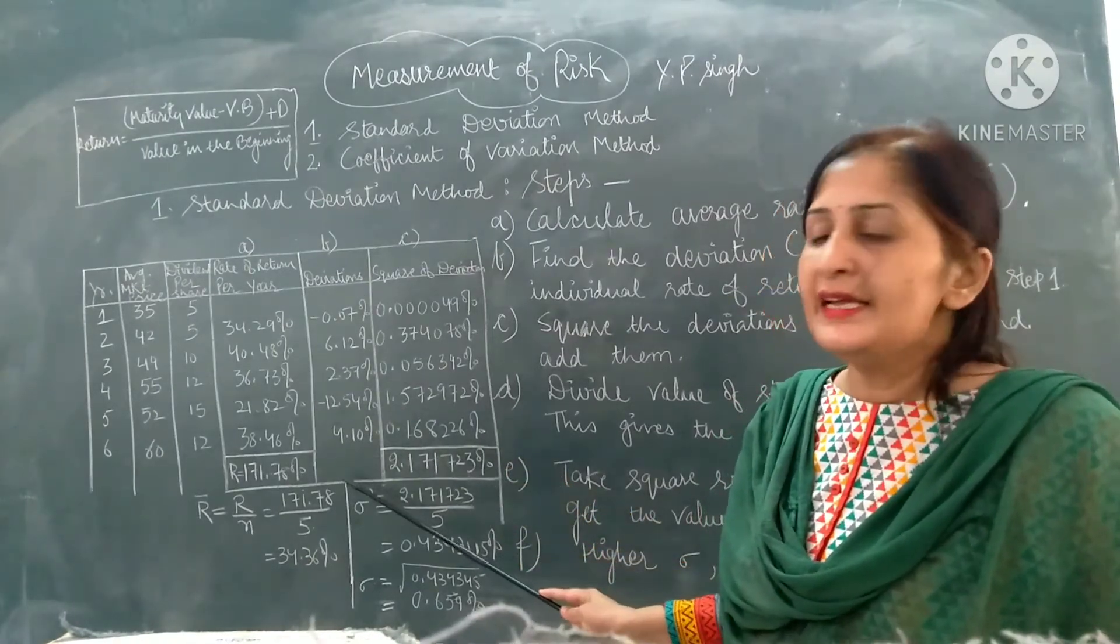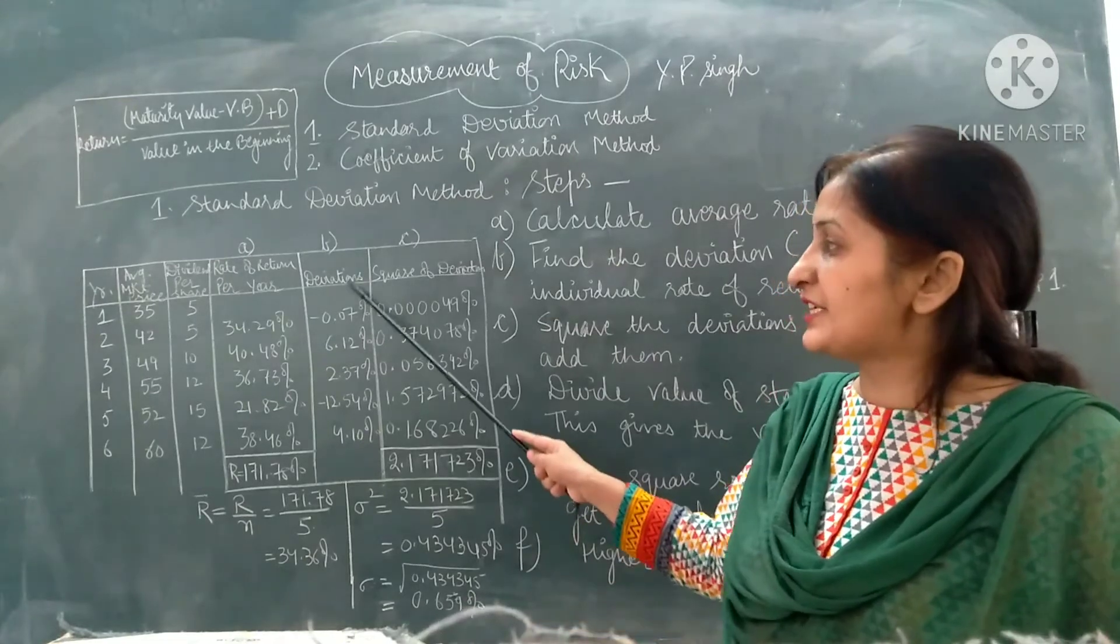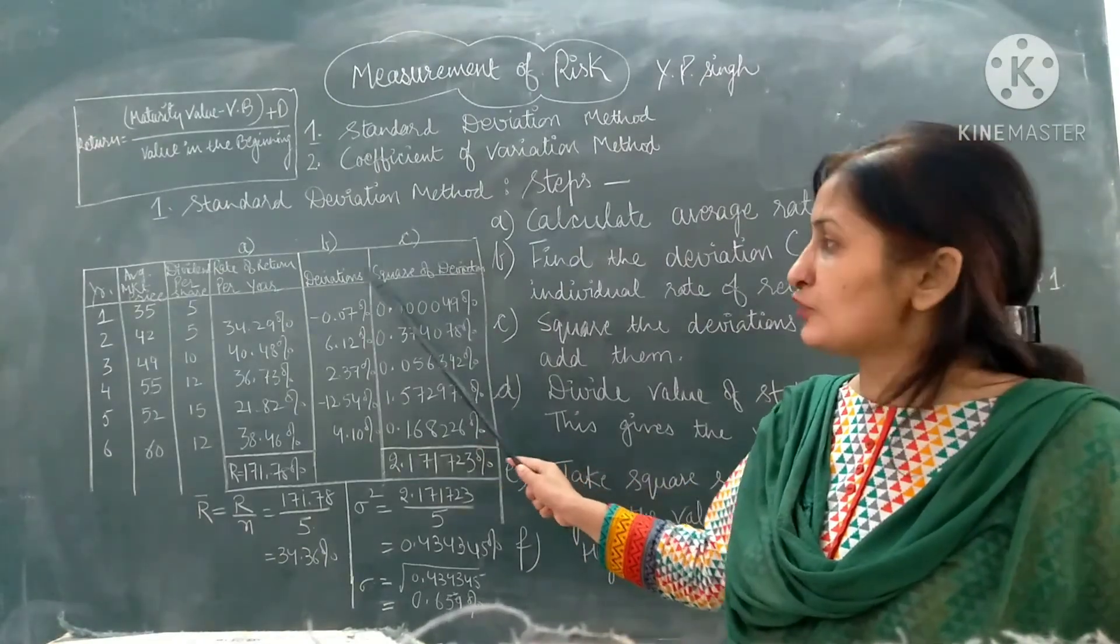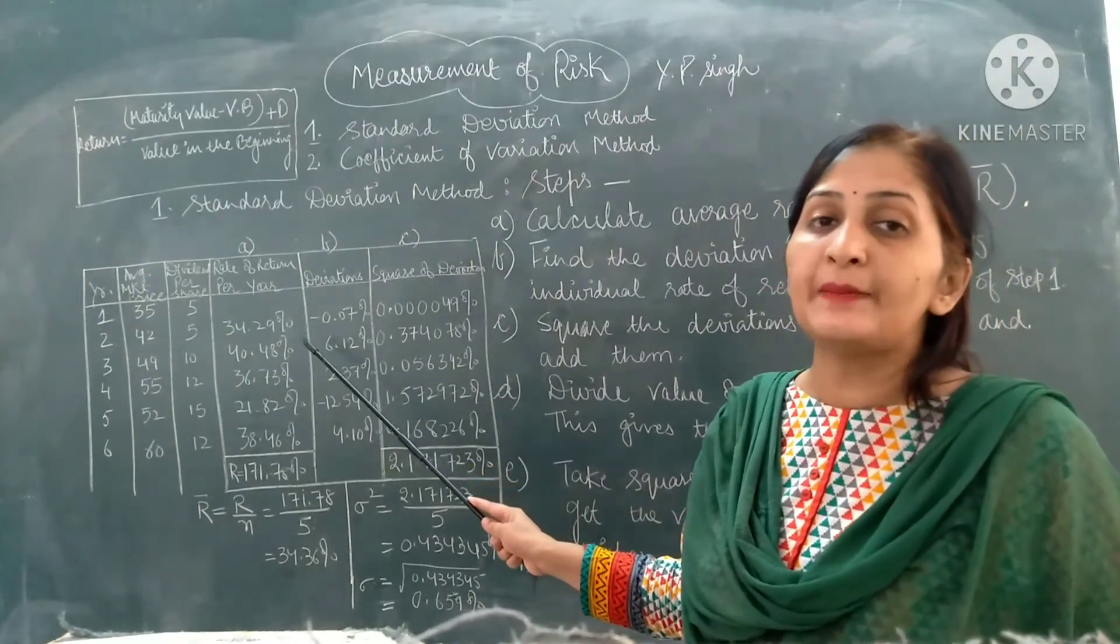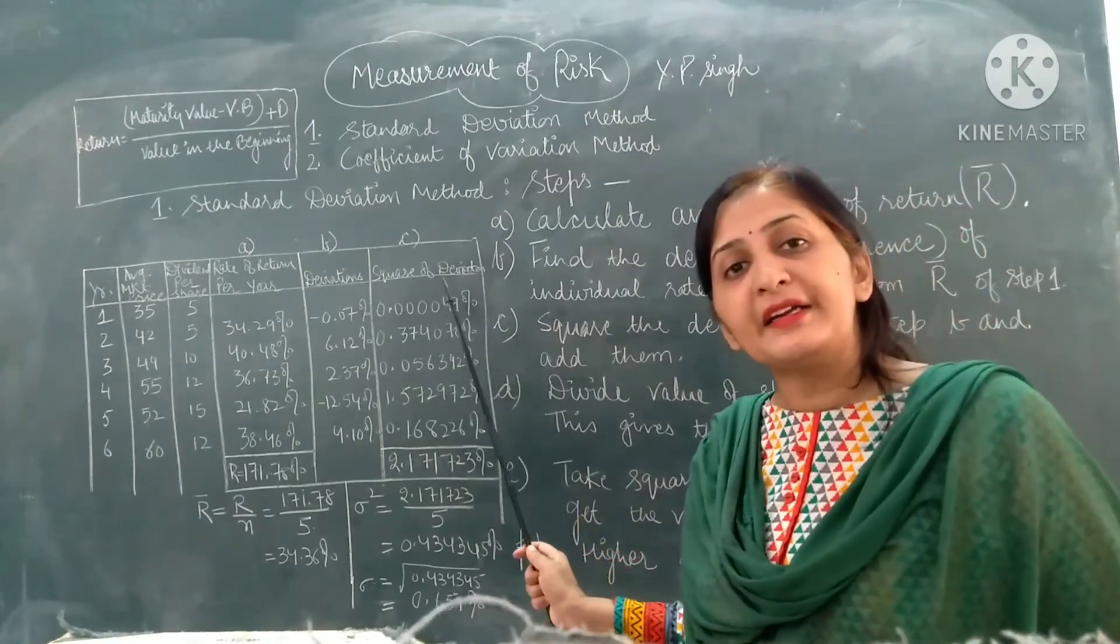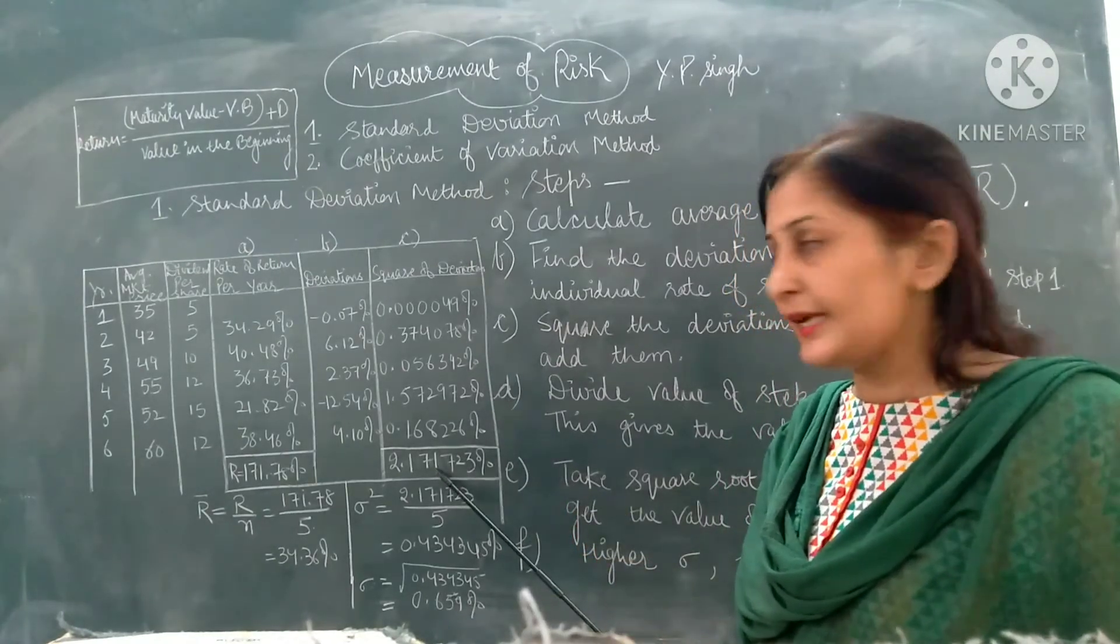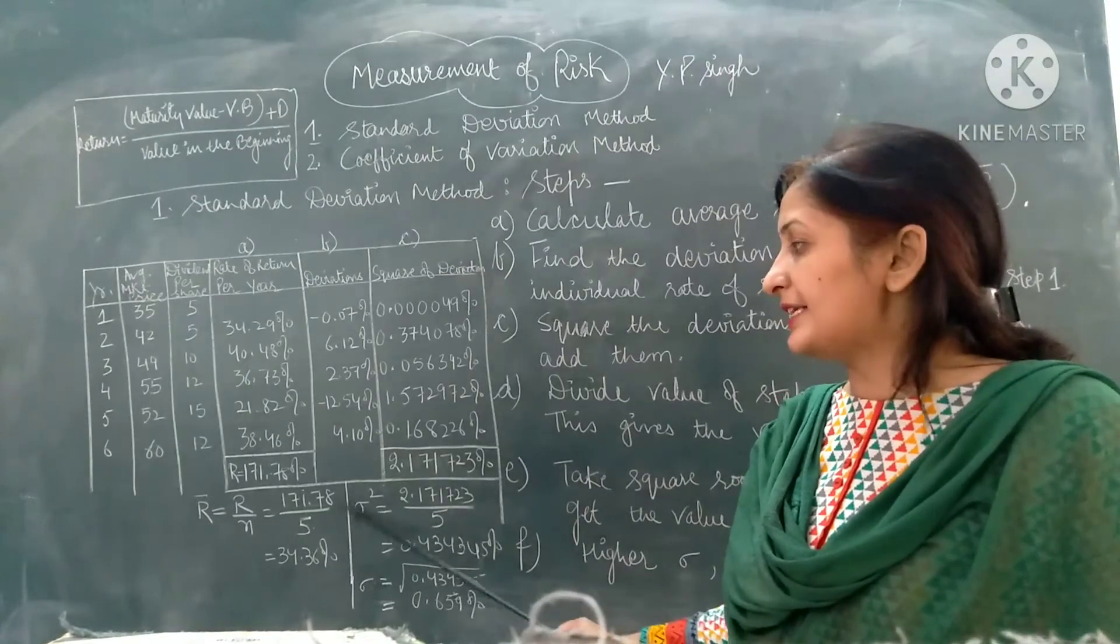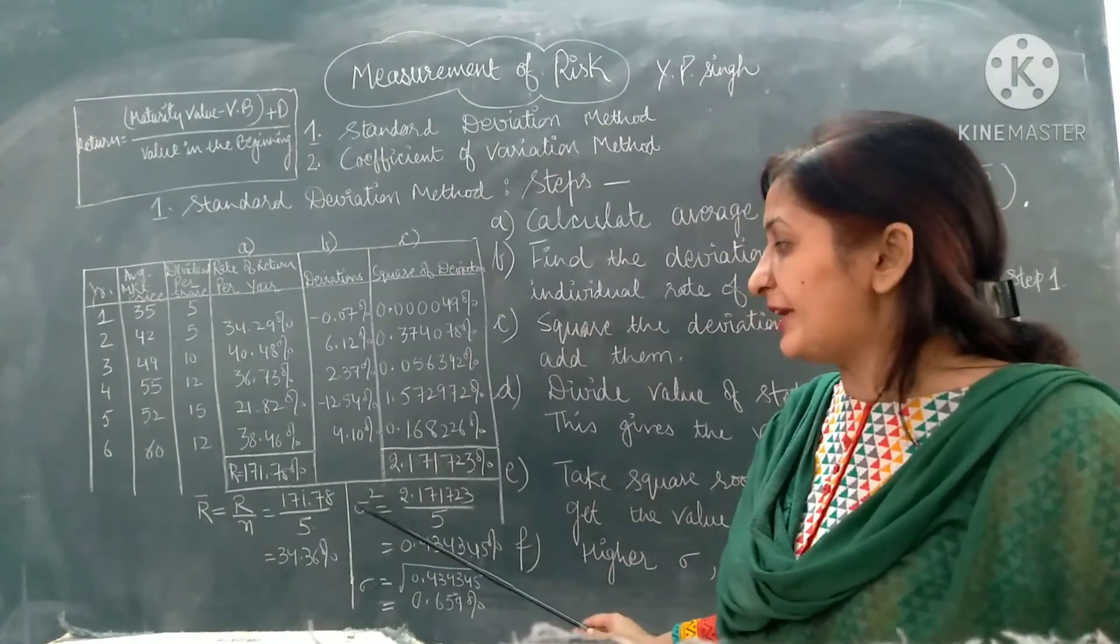We find out the deviations from the average return. This is step B. Step C is to square the deviations. We square these values, multiply the deviations by themselves. After this, we take the total of the squared deviations and divide by the number of years. We get the variance value which is 0.4345 percent.